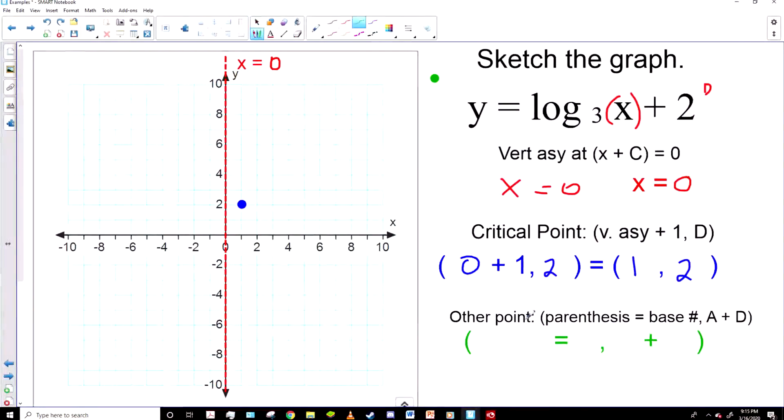Now for the next part, we had to take the parentheses part and set it equal to the base number. So in this case, X needs to equal three. And when we, so it gives us three. And when that happens, the log part will become the value of one.